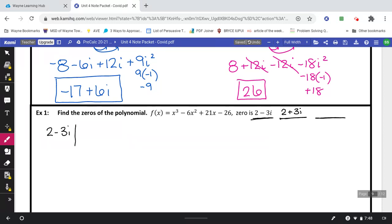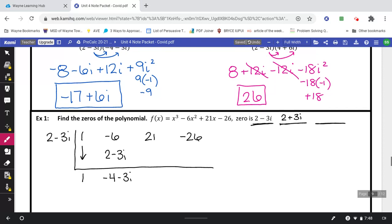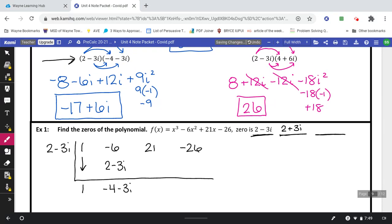So you're going to put 2 minus 3i on the outside here. Give yourself some space to write 1, line up the coefficients, negative 6, 21, negative 26. And we'll do our synthetic division. Bring down the 1. Multiply the numbers on the outside, so 2 minus 3i times 1 is 2 minus 3i. Combine like terms, negative 6 and 2 makes negative 4, and just bring down the minus 3i. Now this part right here, 2 minus 3i times negative 4 minus 3i, that's actually what we did right up here on our warm-up. So let's just go ahead and write our answer of negative 17 plus 6i right here. Combine your like terms. 21 and negative 17 makes 4. Bring down the 6i.